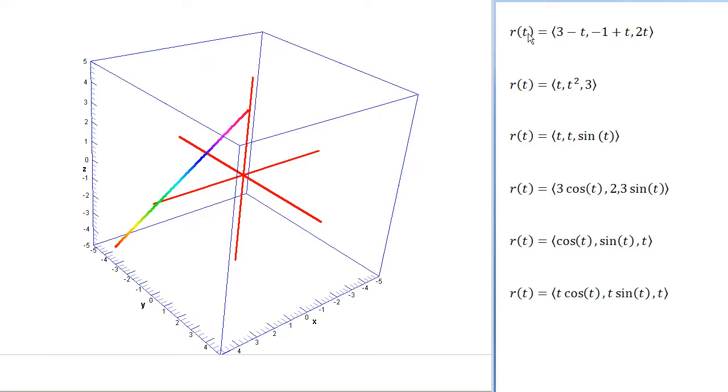So right now we're looking at the graph of this first function, r of t equals 3 minus t, negative 1 plus t, and 2t. And you'll notice that it really is the same thing as the line equations we've looked at before.